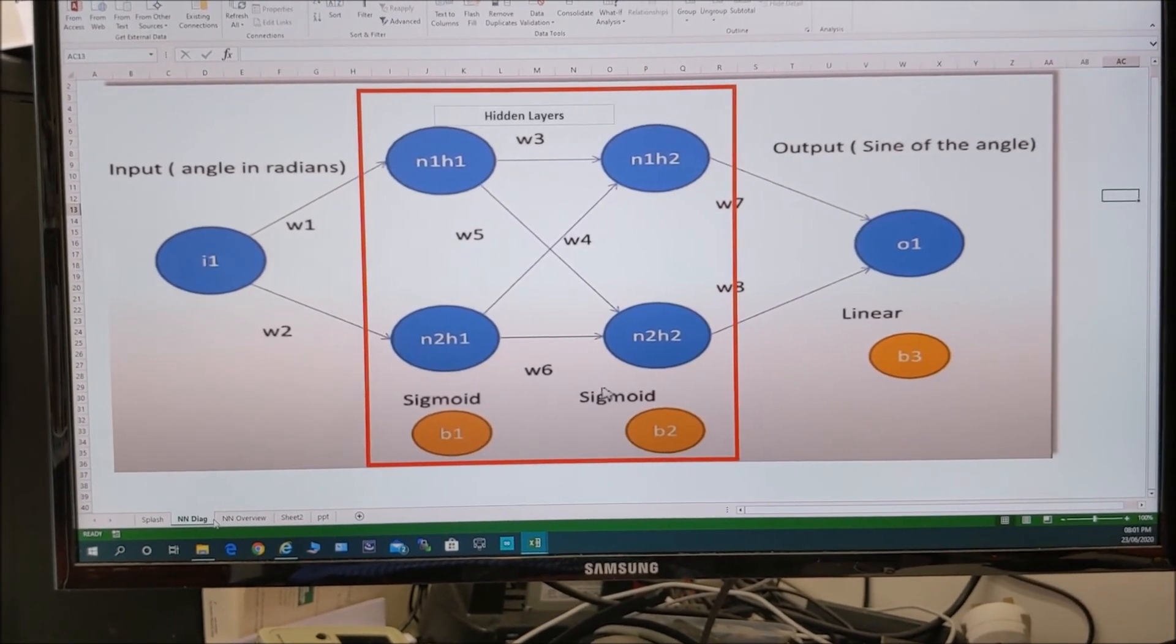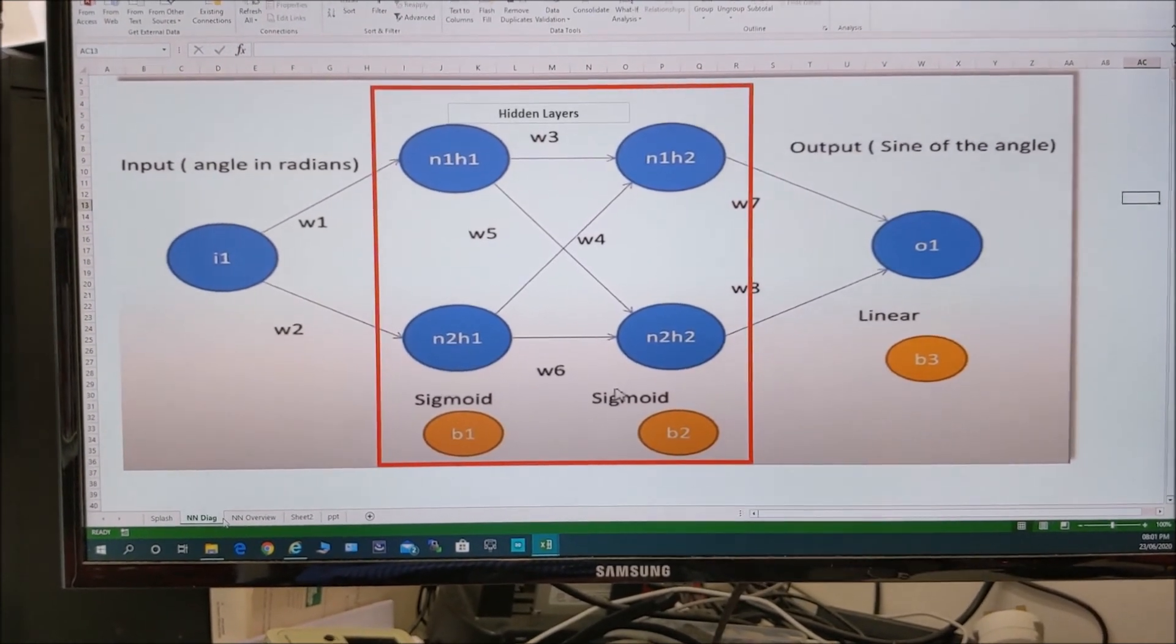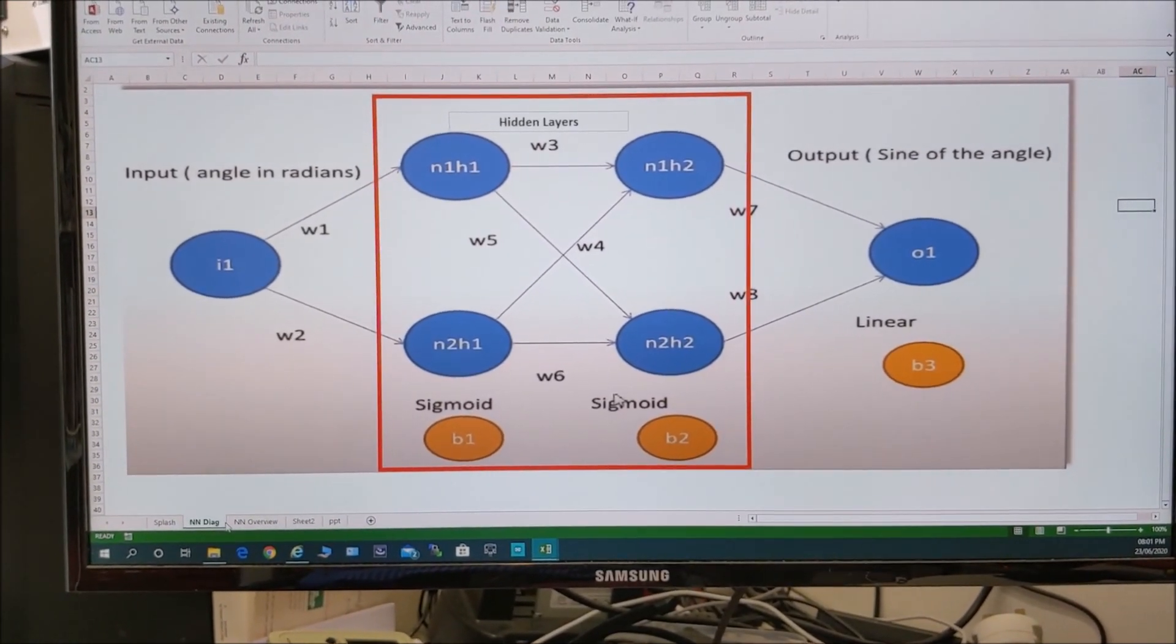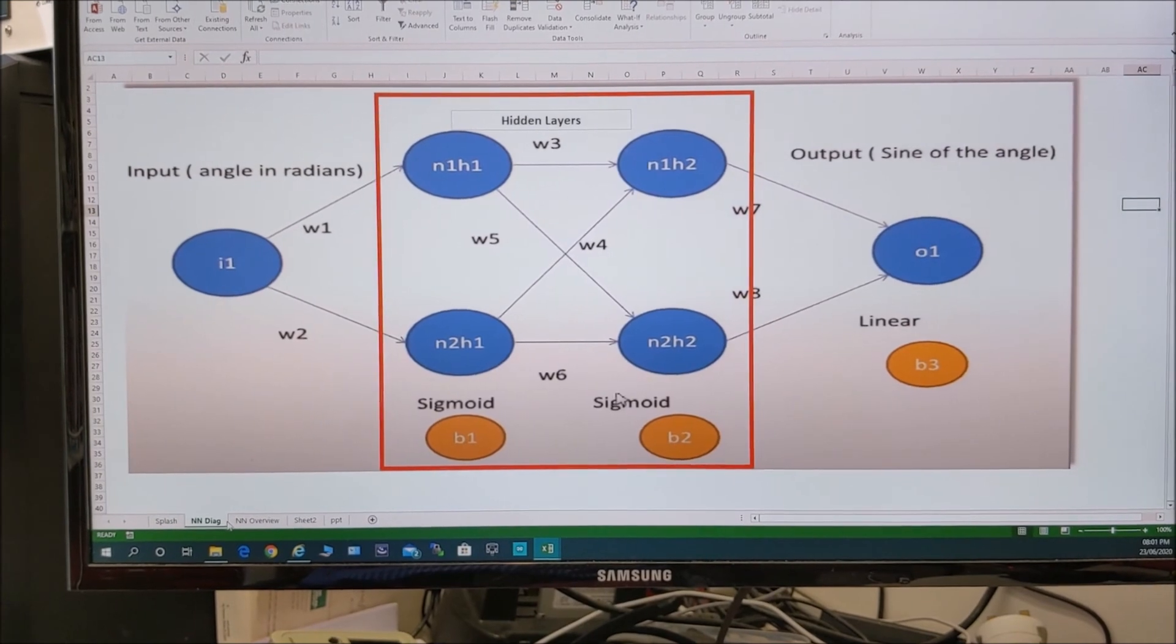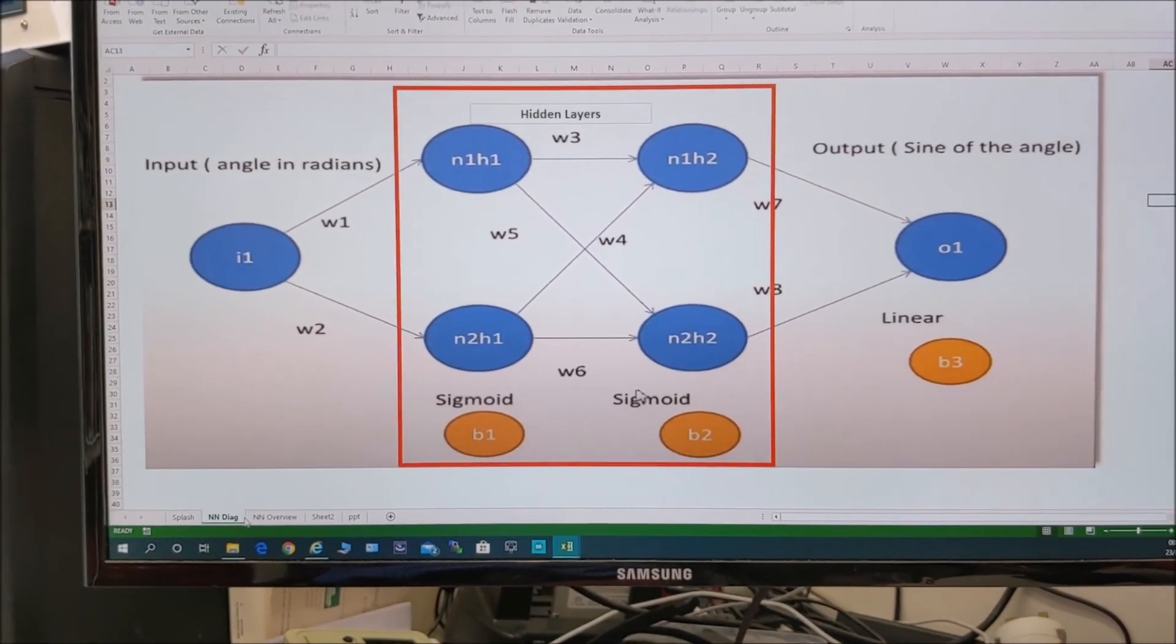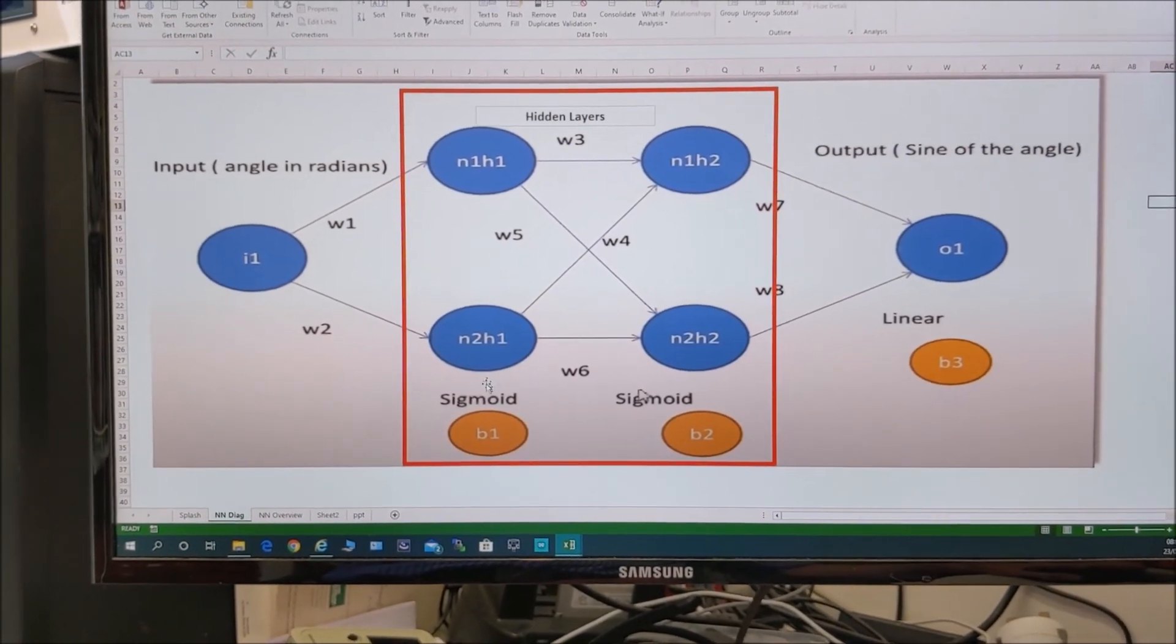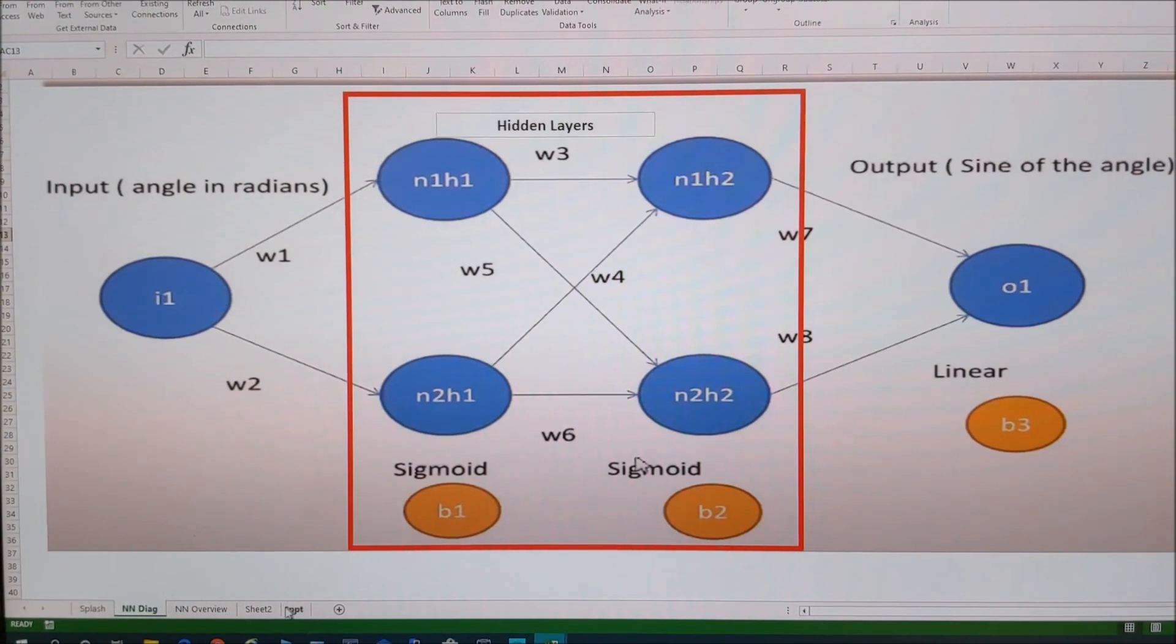Right. Then we start to get the back flow, the back process, which is chain rule partial differentiation. Not to worry. Once again, Excel does it for us in its solver. Fantastic little thing is Excel.